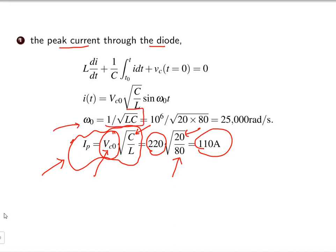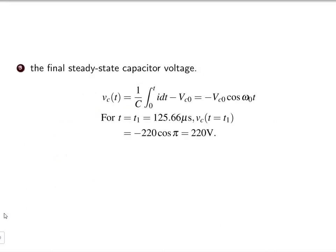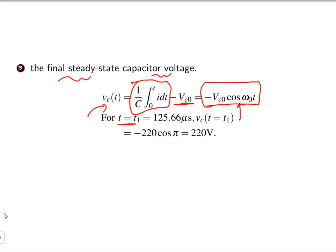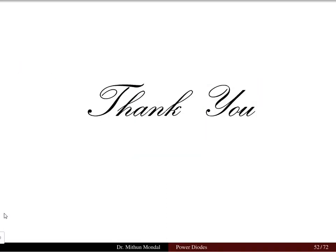Omega_0 is calculated as 1 / sqrt(LC), which equals 25,000 radians per second — the natural frequency of the system. The final steady-state capacitor voltage equals (1/C) integral i dt minus the initial capacitor voltage, which gives minus Vc0 cos(omega t). At time t1 equal to 125.66 microseconds, the value is minus 220 cos(pi), which equals 220 volts. This completes the lecture on the LC load. In the coming lectures we will discuss the RLC load as well as the application of the freewheeling diode.